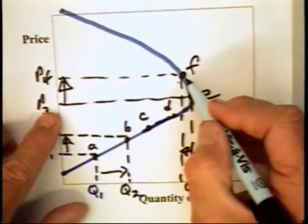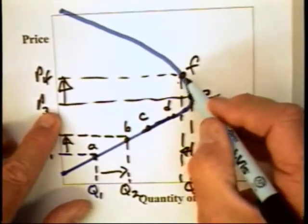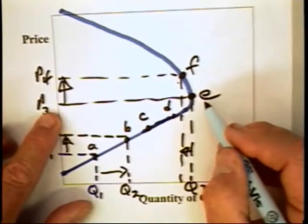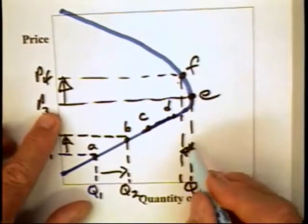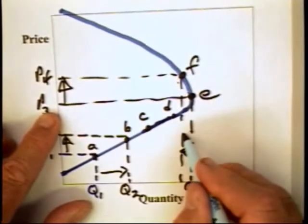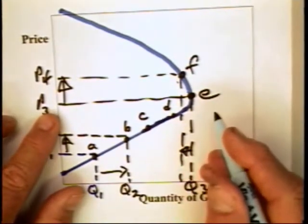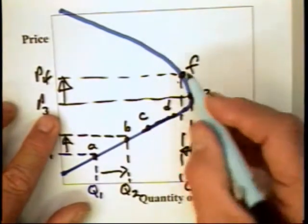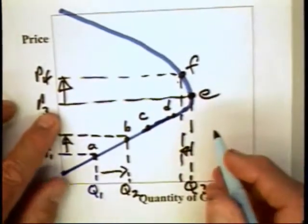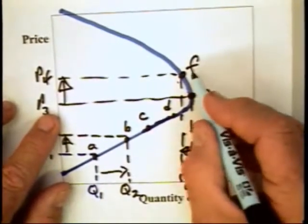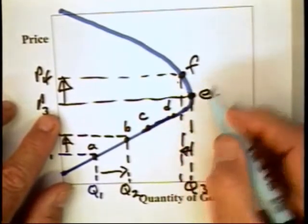As a consequence, F represents more revenue than E. Also, the firm is producing fewer units at F than E, so costs are lower at F. Revenues are higher at F than E. So you've got a situation where F is more profitable than E.